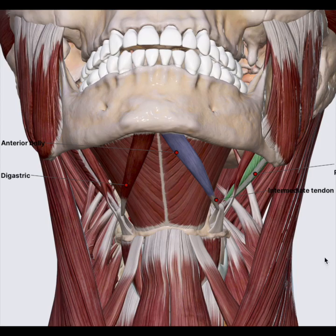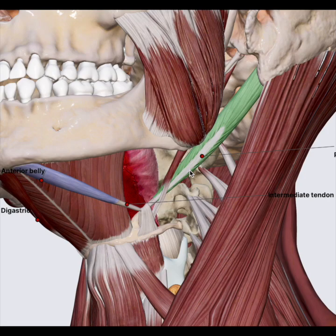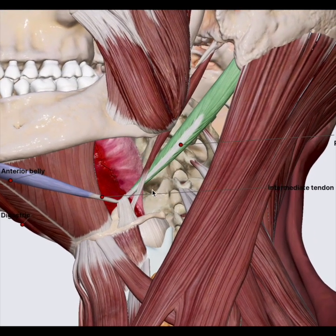We will look at the digastric muscle. Digastric — 'di' means two — so it has got two bellies. You can see one and this is the other one. This app allows us to understand in detail every muscle and its relation to other anatomical structures. The muscle is composed of an anterior belly and a posterior belly, and they join together with the intermediate tendon. This looks like a V, and the intermediate tendon represents a common point of insertion.